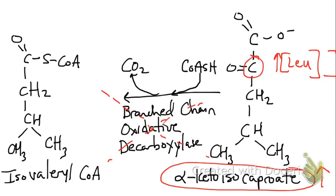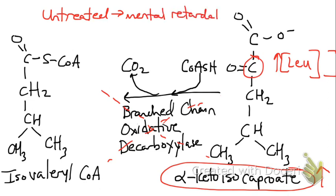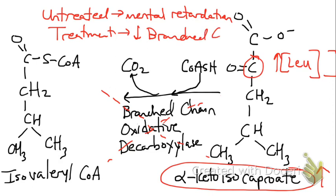Untreated, maple syrup urine disease will lead to mental retardation. With many inborn errors of metabolism, we see defects in the brain — defects in thoughts, intelligence, and development — because a lot of these intermediates can be toxic. The treatment is simply to decrease your branched chain amino acids: leucine, valine, and isoleucine — you just don't eat them and you'll be fine.